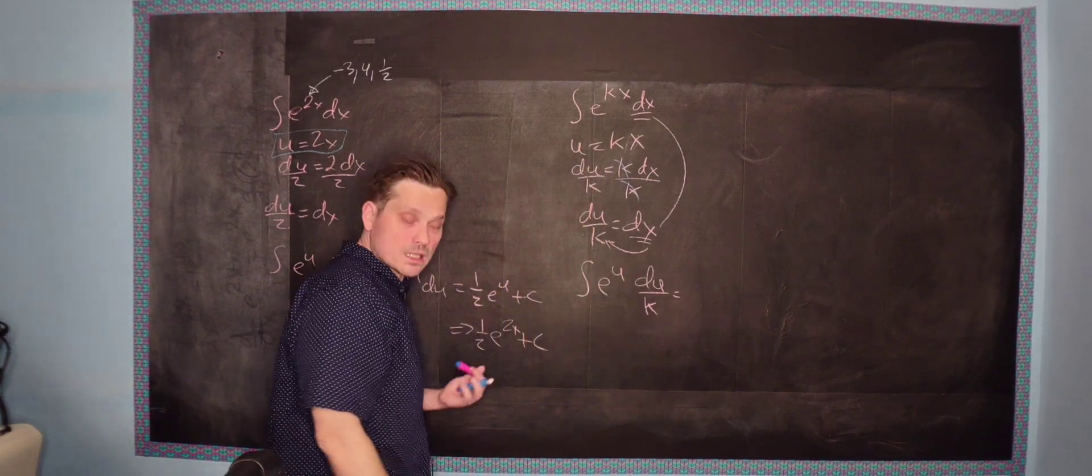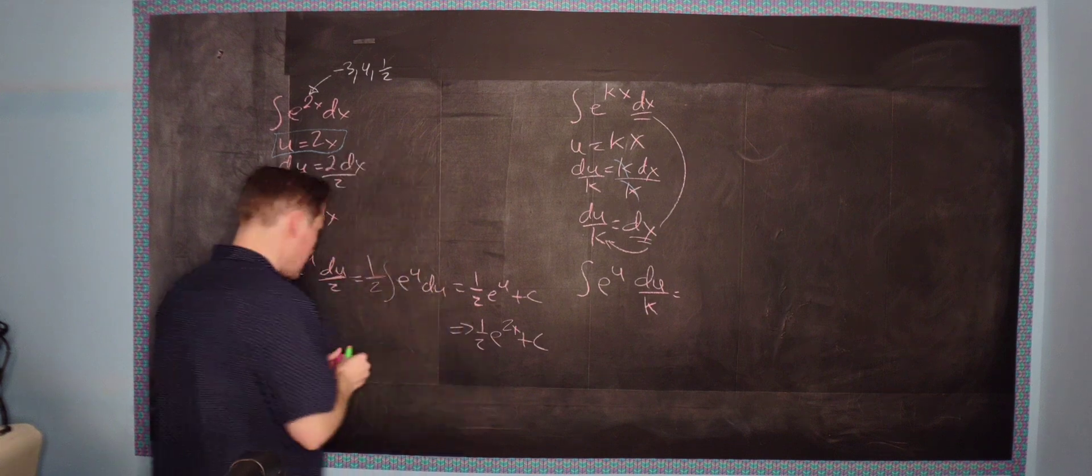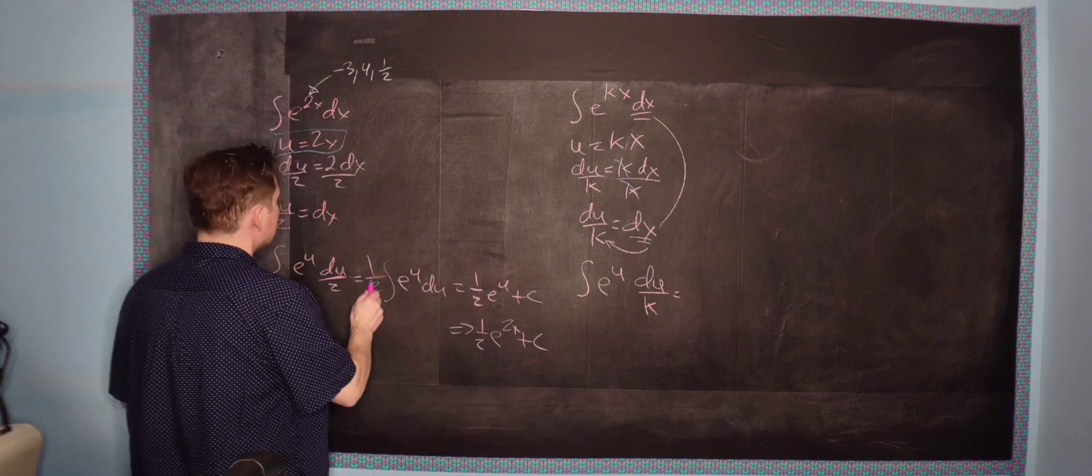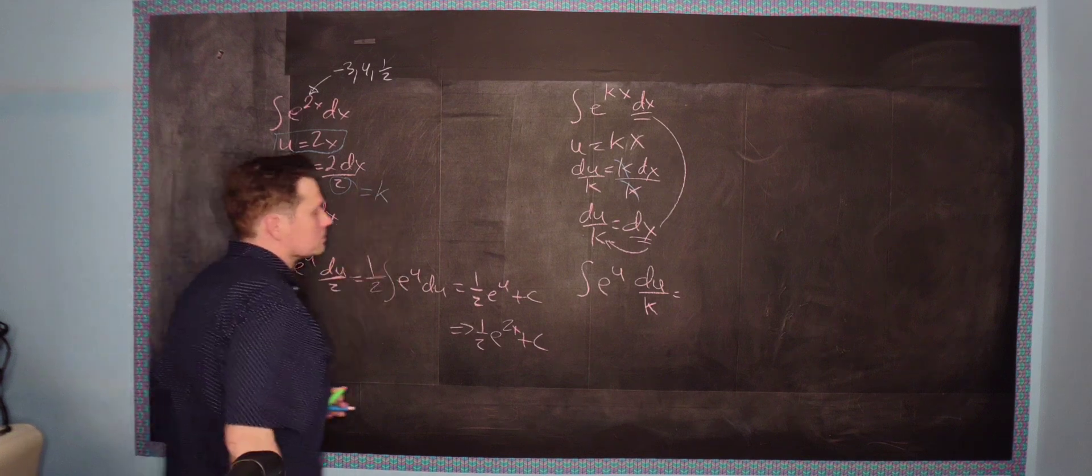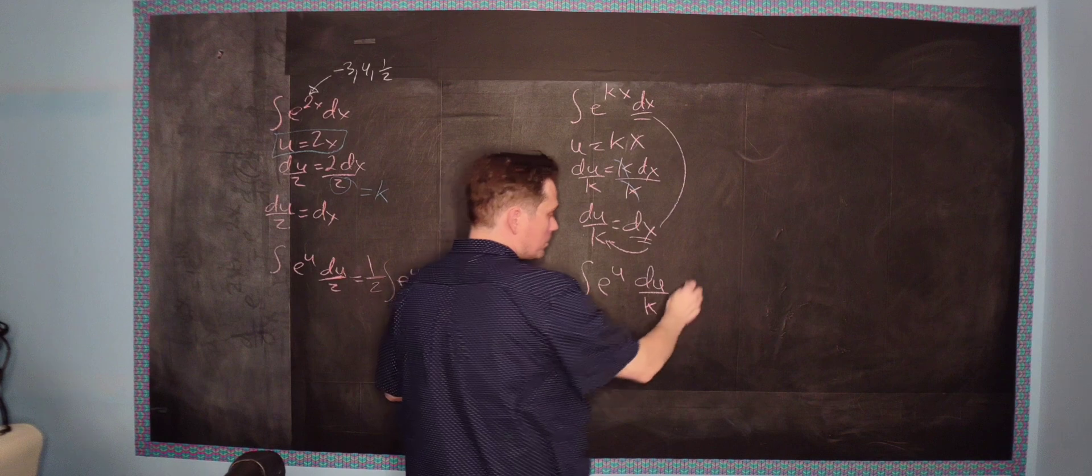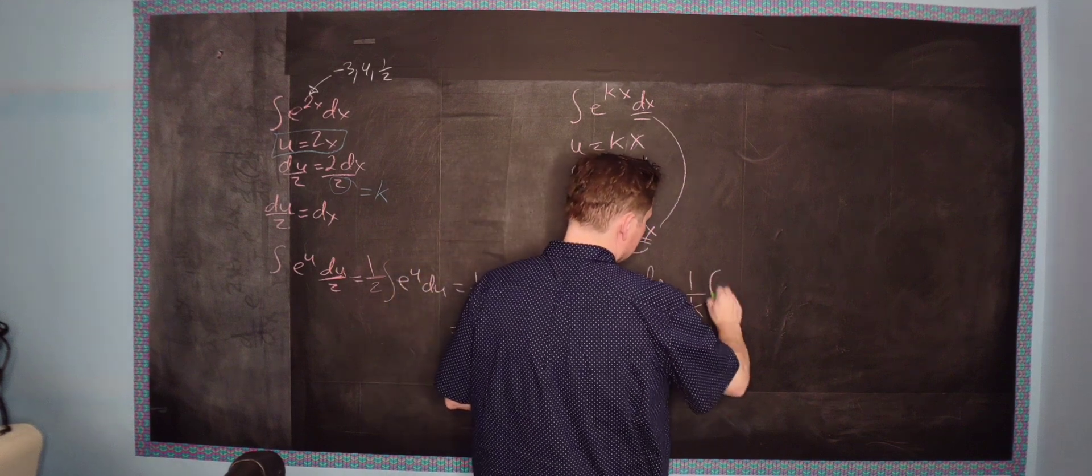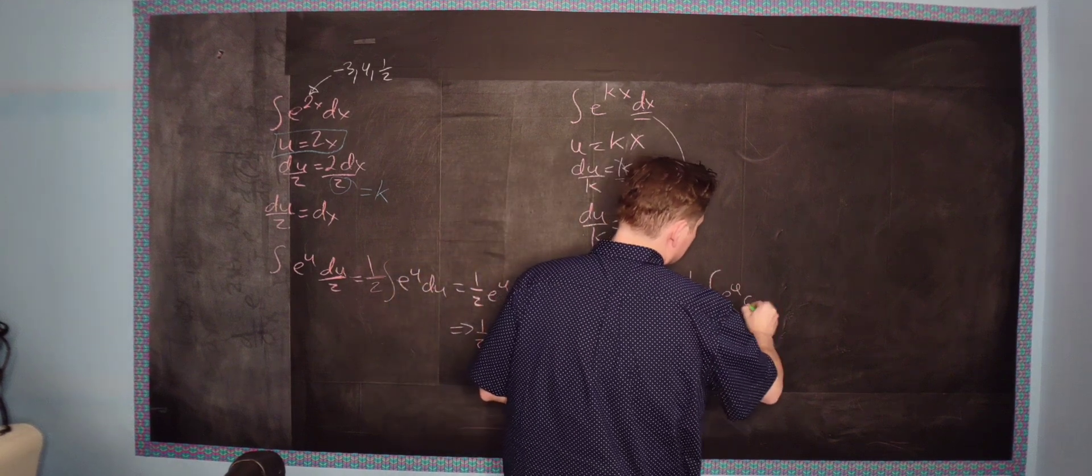So you're going to put du over k. And that k is like a constant. Again, let me stress. So in this case, the k back here, this was our k, right? k happened to be equal to 2. Same logic, though.